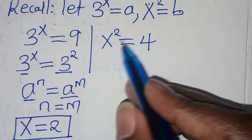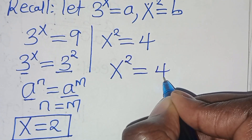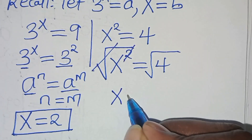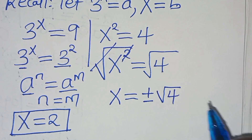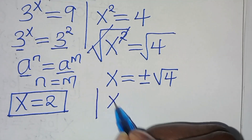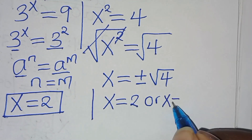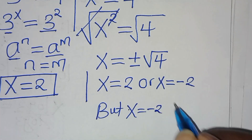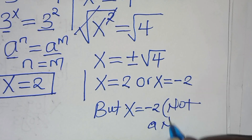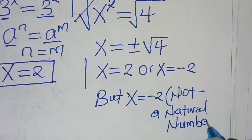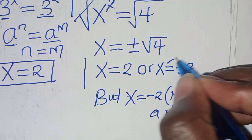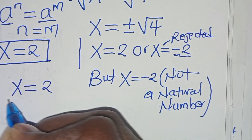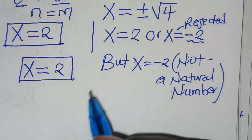Let's proceed to this side. We have x to the power of 2 equals 4. To solve for x, we introduce the square root on both sides, so that x is equal to plus or minus the square root of 4. This gives x equals 2 or x equals minus 2. But x equal to minus 2 is not a natural number, so x equals minus 2 is rejected. Therefore, we only have one solution: x is equal to 2.